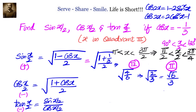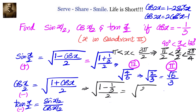For cos(x/2): square root of (1 + cos x)/2 = square root of (1 - 1/3)/2 = square root of (2/3 × 1/2) = 1/√3 = √3/3. Since we know cos(x/2) is negative in the second quadrant, this becomes -√3/3.